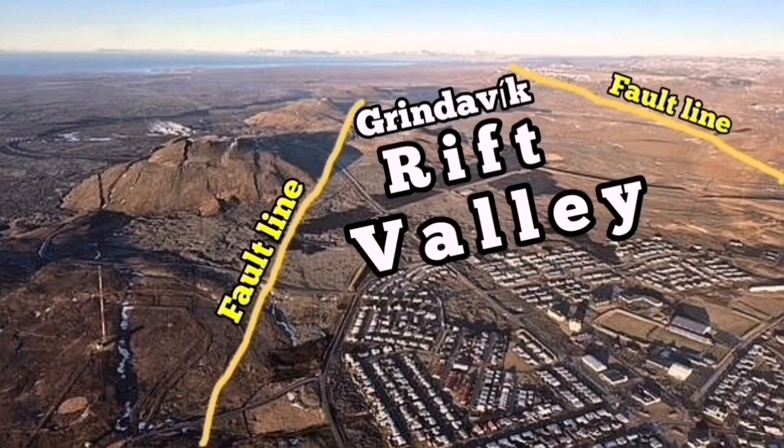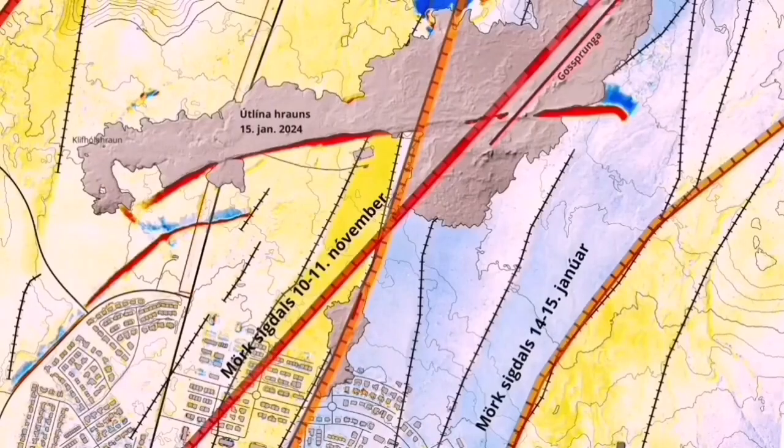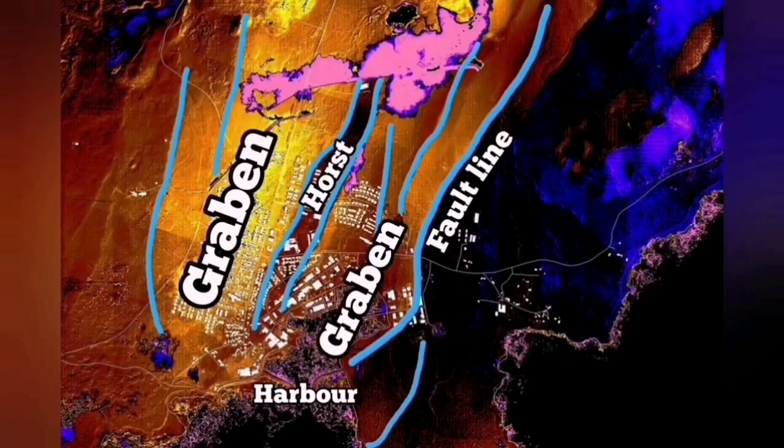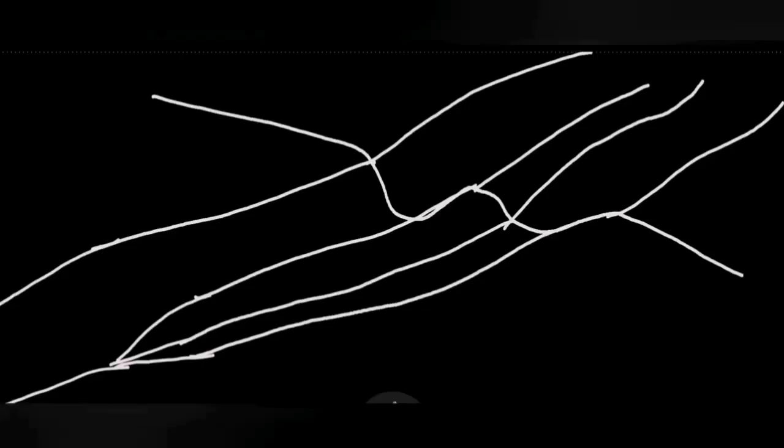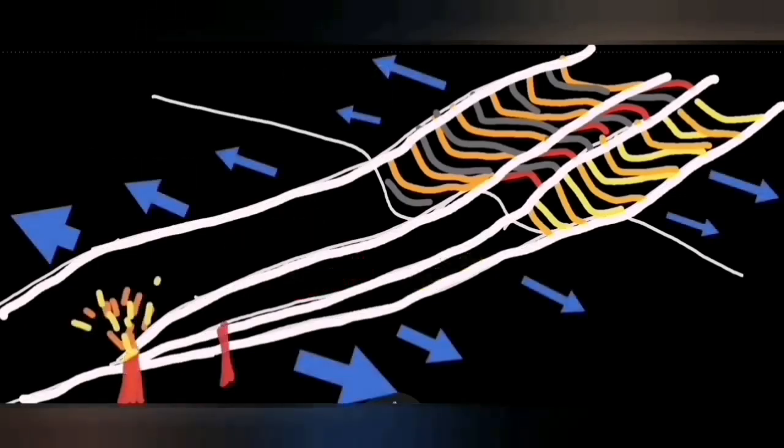This is the Grindavík Rift Valley. Usually, the stretching of the ground causes the fault lines to fall down in the middle part, which is the Grindavík Rift Valley. As you can see, it has created this kind of fault system there, a rift.